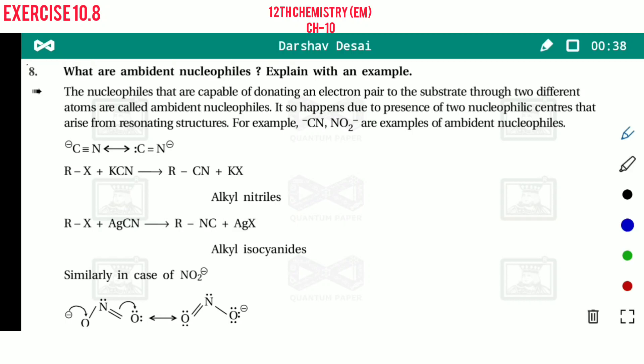So the definition is: the nucleophiles that are capable of donating electron pair to the substrate through two different atoms are called ambident nucleophiles. And in our NCERT book, only two examples are given: cyanide and nitrite. So definition is clear.